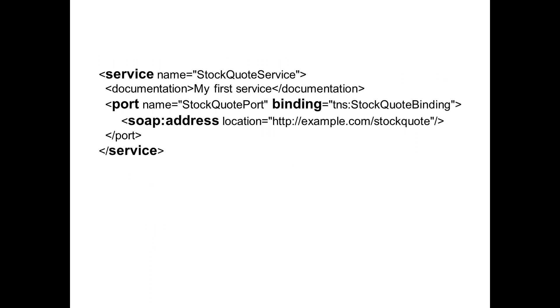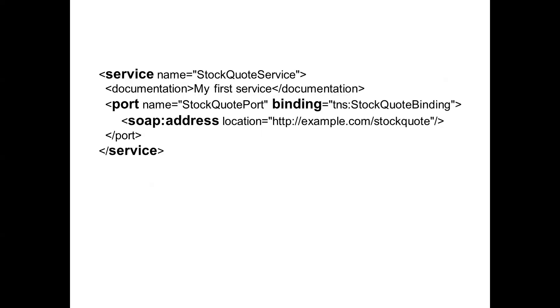When it comes to service, you give the service name, port name, and the address. This is the service component. So this covers web services definition language — WSDL components: port type, services, binding, and messages. This is how data is transferred among web services.